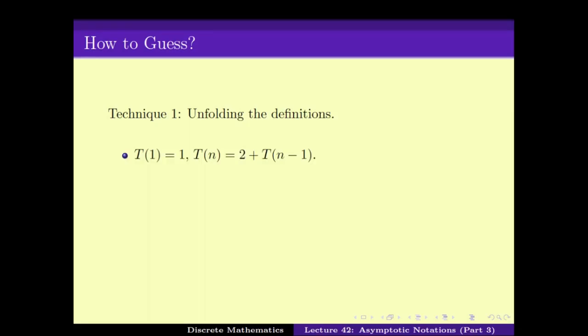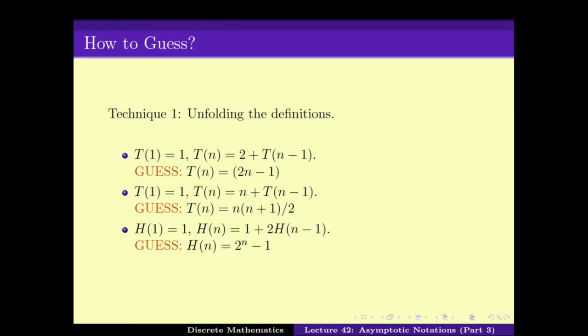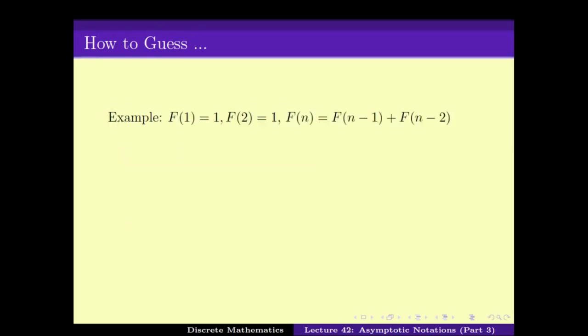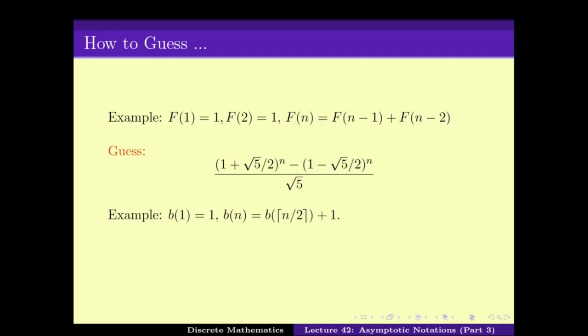We saw how unfolding can be done for a set of recurrence relations. But there are recurrence relations which are very hard to guess. One reason can be that the recurrence relation itself is very complicated — for example, the Fibonacci number is pretty complicated, so you don't expect to guess it easily. Additionally, there are examples with floor and ceiling in the expression, which are pretty complicated to work with, so there is no nice guess available.